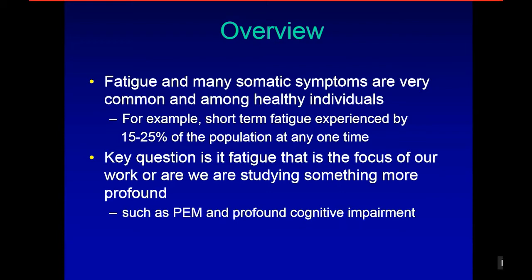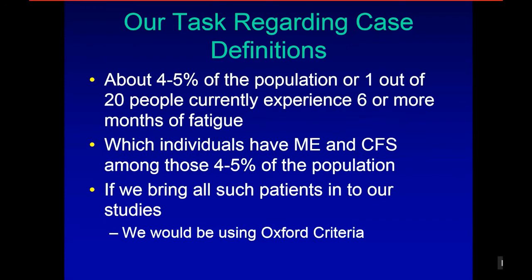Regarding case definitions, about 4% to 5% of the population — 1 out of 20 people — currently experience six or more months of fatigue. Which individuals have ME and CFS among those 4% to 5%? If we bring in all such patients into our studies, we'd be using the Oxford criteria, and we certainly have seen problems with that with the PACE trial.